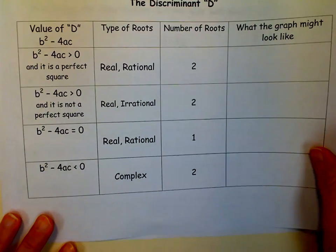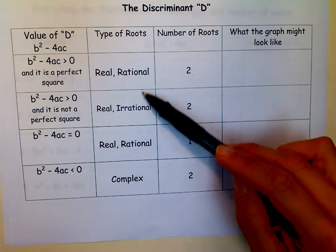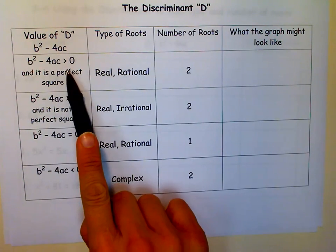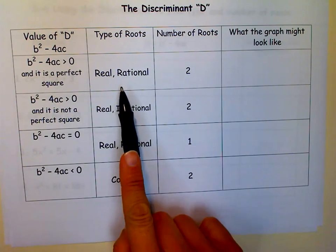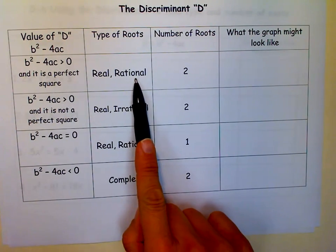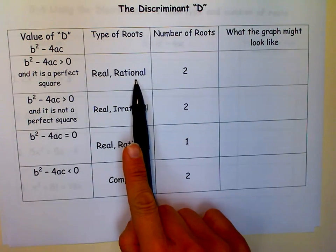Keep in mind that there are four different things that can happen that tell you what kind of roots you'll have. If the discriminant is greater than zero and it's a perfect square, you're going to have two real roots, and they're going to be rational. It means they can be written as a fraction, you won't have square roots of 17 kind of thing going on.